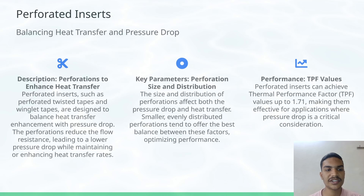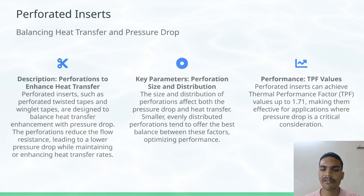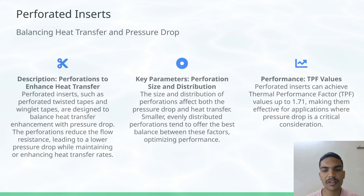Perforated inserts such as perforated twisted tapes, helical perforated tapes, and winglet tapes are designed to balance heat transfer enhancement with pressure drop. The perforations reduce flow resistance, leading to a lower pressure drop while maintaining and enhancing the heat transfer rate. The size and distribution of perforations affect both pressure drop and heat transfer.